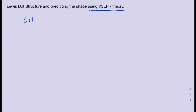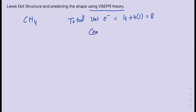I have CH4. The first step when drawing the Lewis structure is finding the total valence electrons. The total valence electrons here is going to be 4 on carbon and 1 on each of the hydrogens, so that's a total of 8 valence electrons. The next step is finding the central atom, which in this case is going to be the carbon.